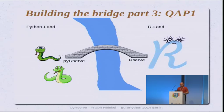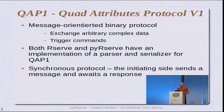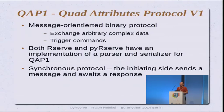The missing piece of that bridge is the protocol these two sockets use to talk to each other. That's the QAP1 protocol — Quad Attributes Protocol — which sounds much bigger than it is. It was invented by Simon just for the purpose of letting R clients talk to the R server. It allows exchanging serialized objects between R and Python, not just within the Python ecosystem, and it also contains commands so the R-Serve side knows what to do with the data you're sending.